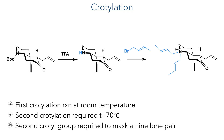Moving forward to prepare the precursor to the next cyclisation reaction, the Boc group was first deprotected using TFA, and then two crotonyl groups were installed using crotonyl bromide. The first crotonylation reaction was carried out at room temperature, while the second required elevated temperatures. The function of the second crotonyl group is to mask the lone pair of electrons on the nitrogen, as the authors found that with the lone pair available to react, it would poison the catalyst used for the cyclisation.